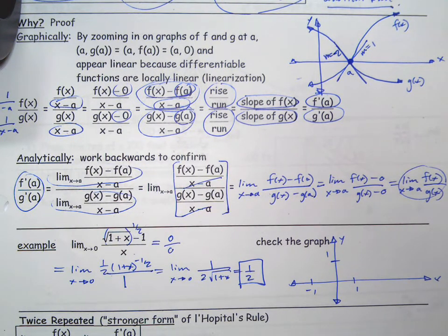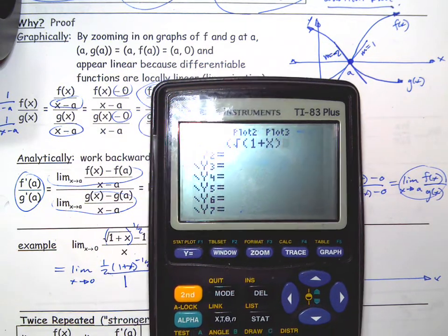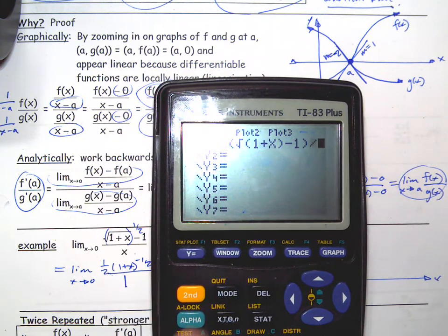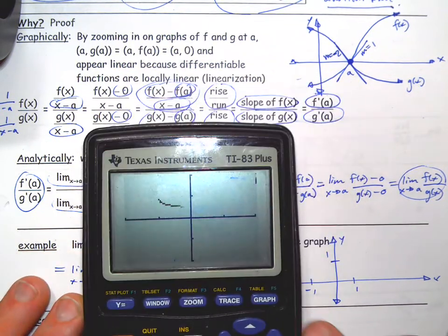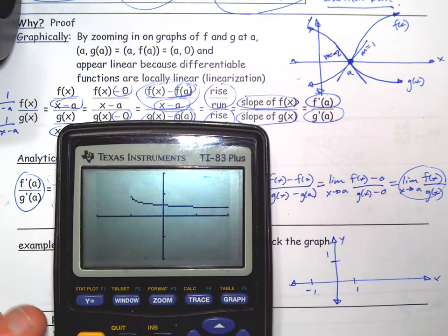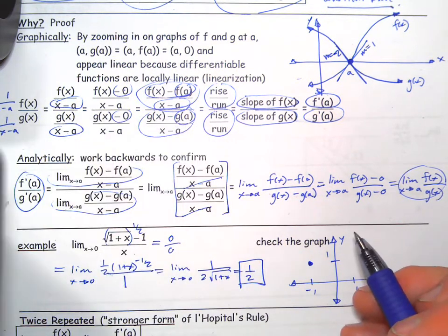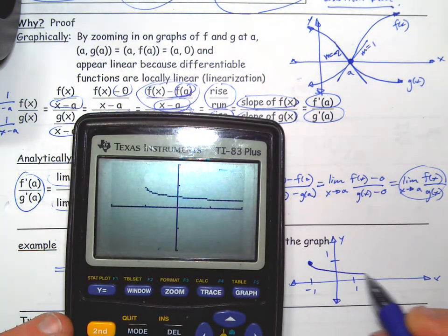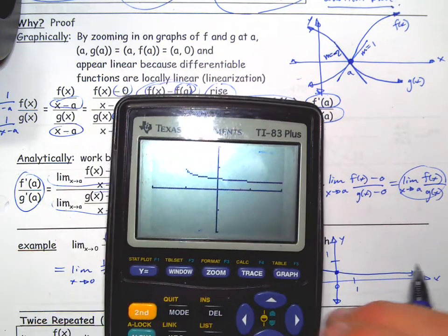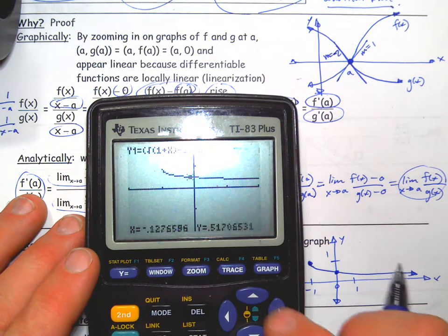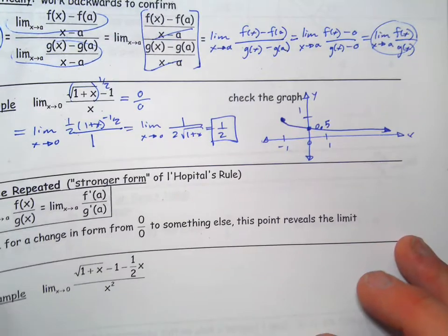Let's verify this on the calculator. The function is (√(1+x)−1)/x. Set the window to −2 to 2 on both axes. The graph looks kind of like an upside-down half-curve — at x=−1 you get a value of 1, and as it approaches x=0 it appears to be heading toward about 0.5. Using trace, it does look like 0.5. So graphically, it confirms our answer. That should help you feel better about the result.